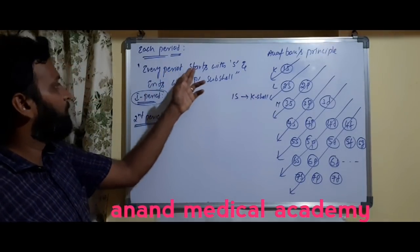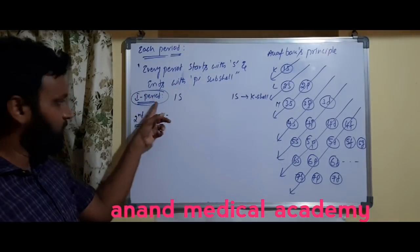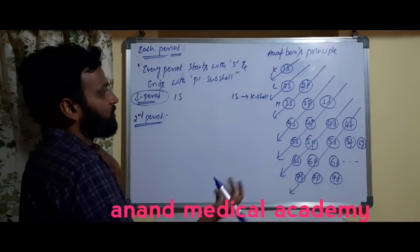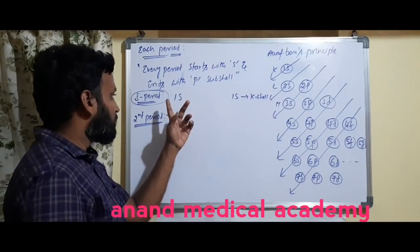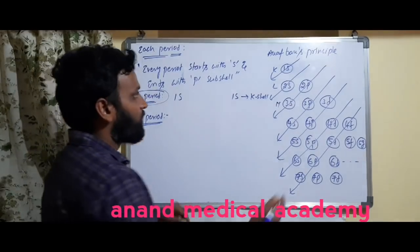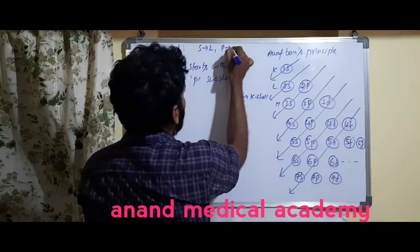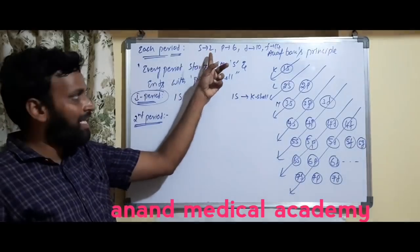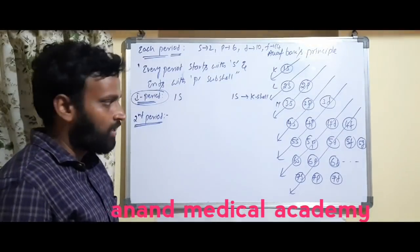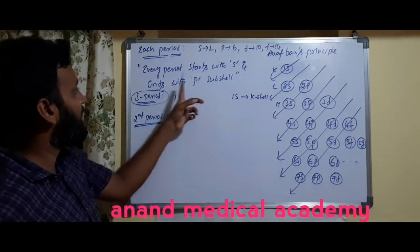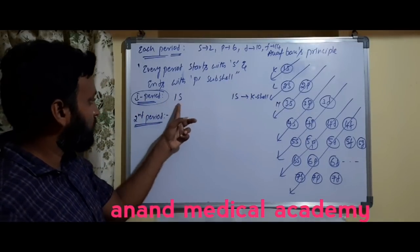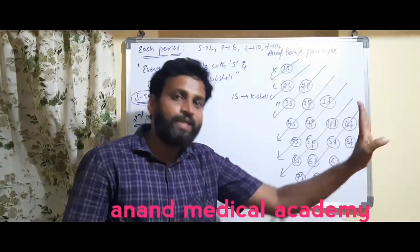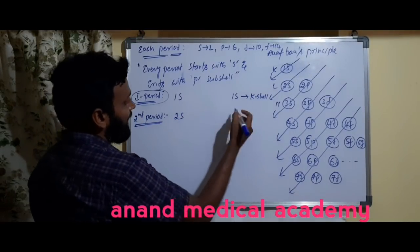Every period starts with S and ends with P sub-shell, except the first period. The first period starts with 1s and ends with 1s. The second period starts with 2s and ends with 2p. Energy increases from 1s → 2s → 2p. So the second period goes from 2s to 2p.